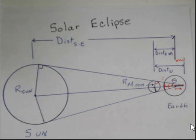For the total solar eclipse, we'll calculate the width of the umbra on the Earth, the width of the moon's shadow on the Earth. These will be a little bit approximate, but I think you'll be able to follow the calculations.